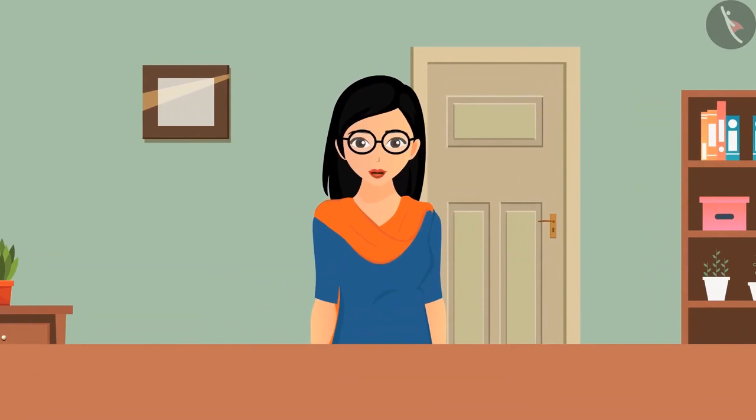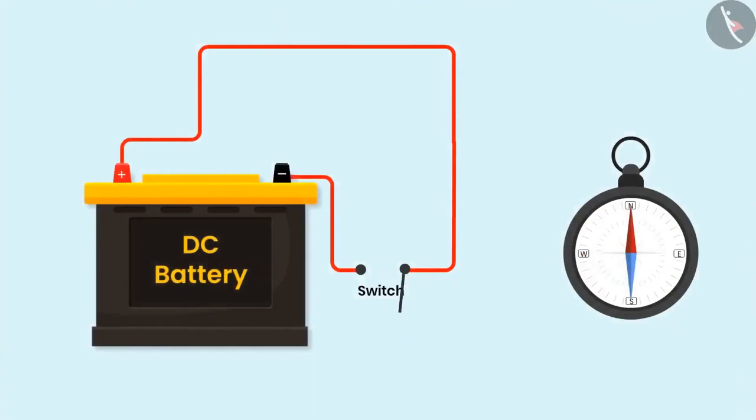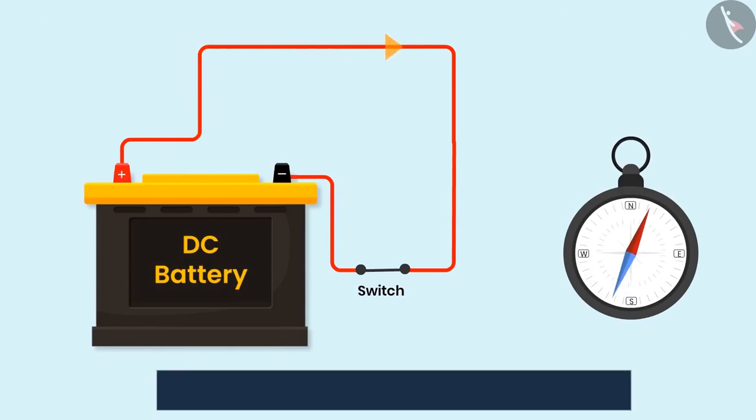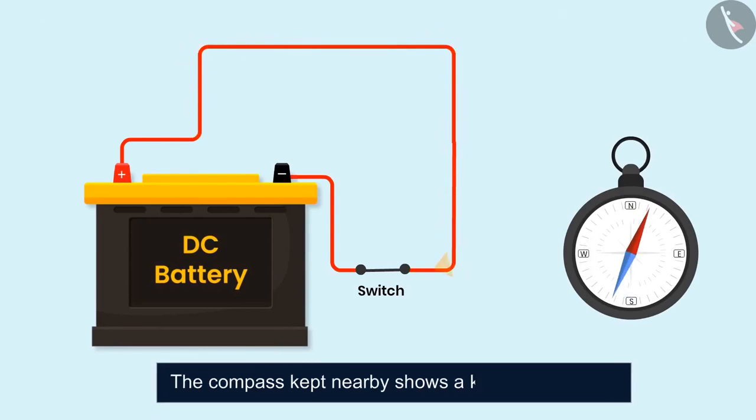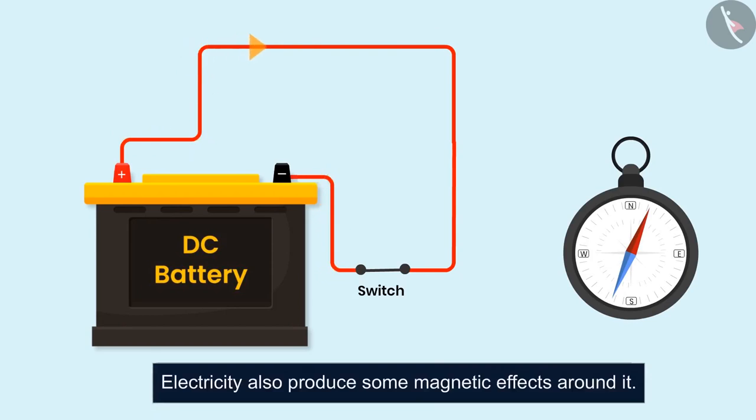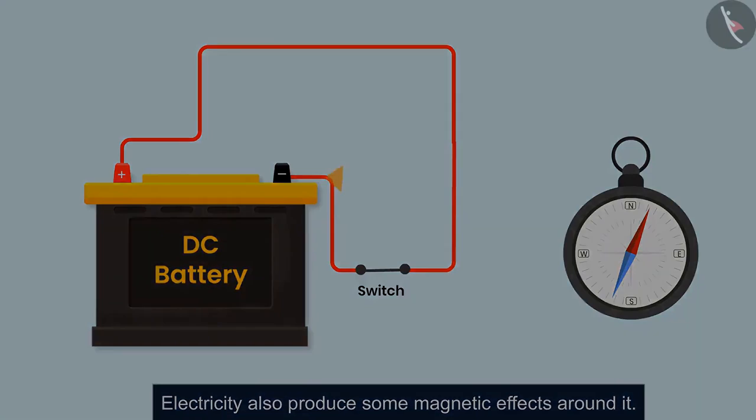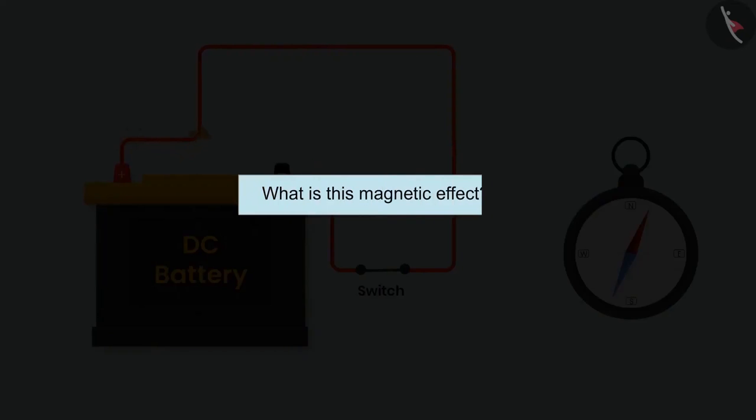Hello friends, today's video will not start with an example or an activity but rather with a story that changed the definition of science. When electric current was flowing through a metal wire, the compass kept nearby showed a kind of deflection. Then Oersted realized that electricity also produces magnetic effect. But what is this magnetic effect?